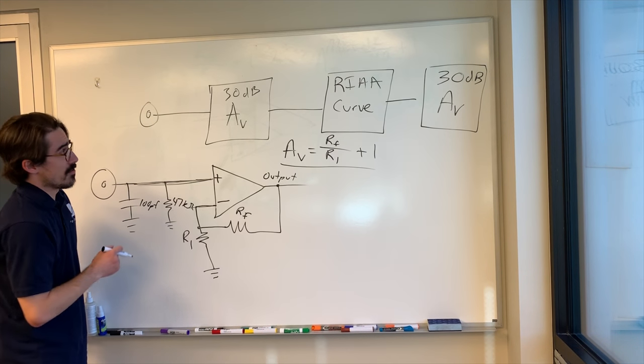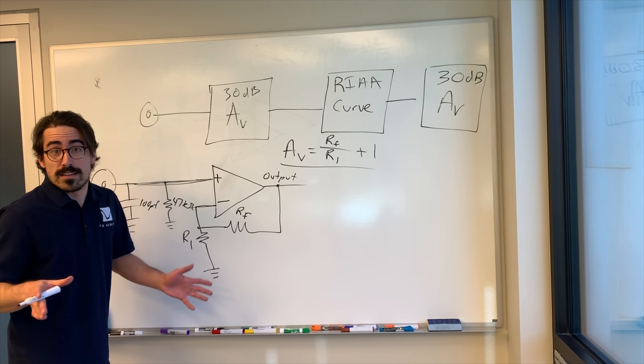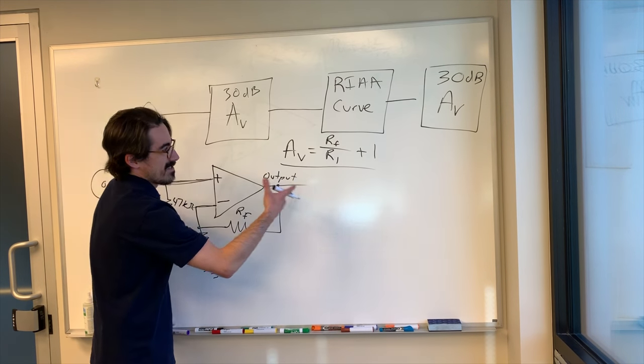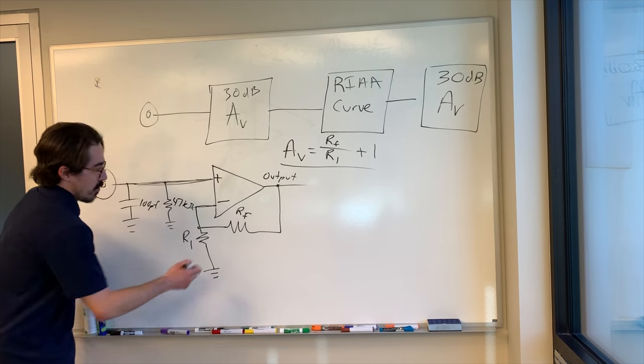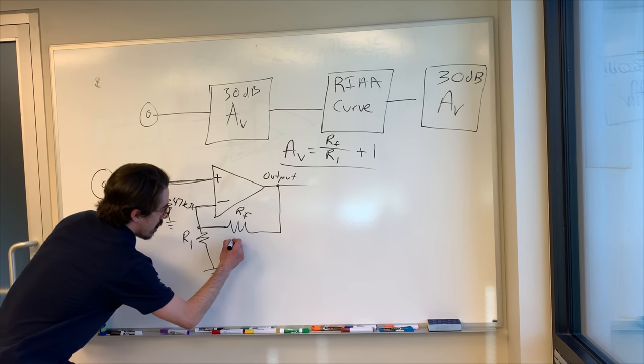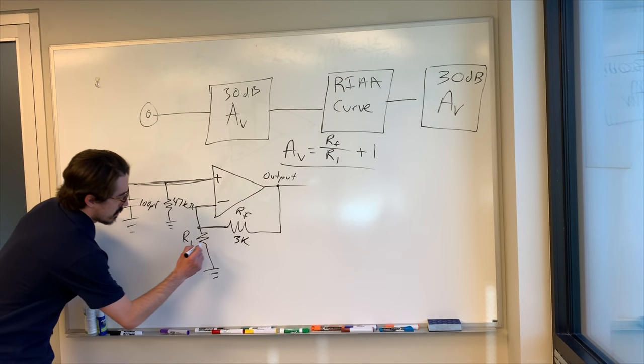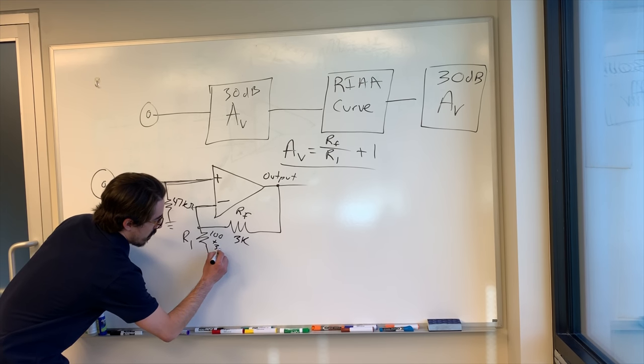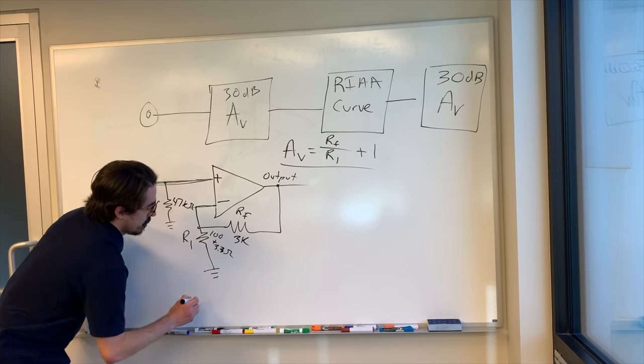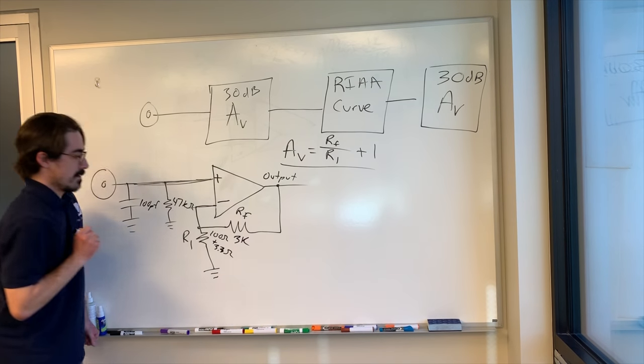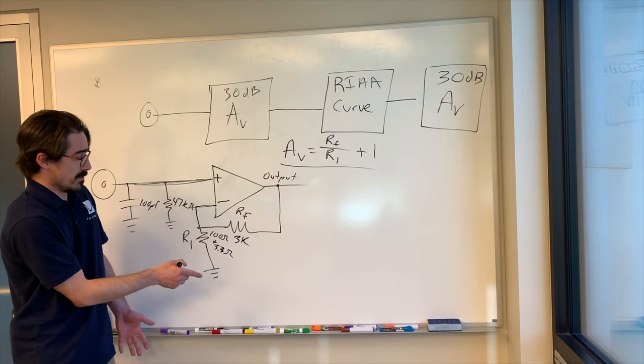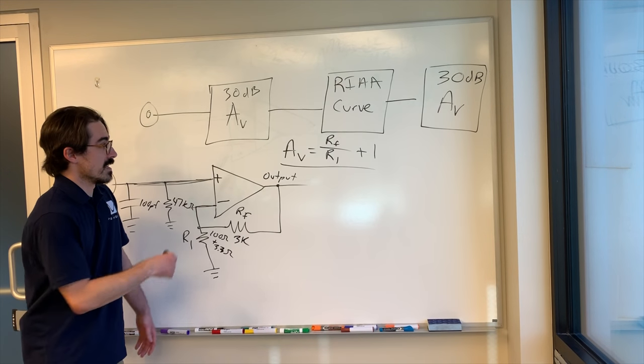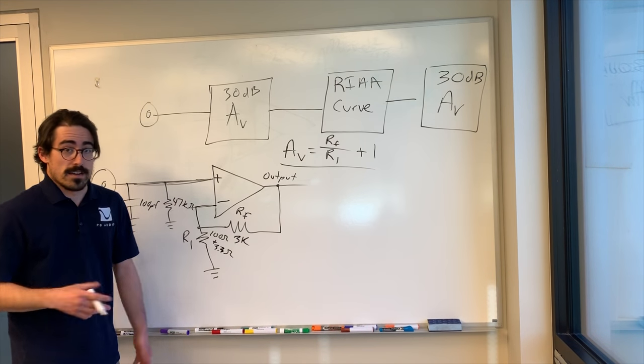So let's set that, so we need 30 dB. 30 dB is roughly 30 times voltage gain. So the ratio here, we want to make it roughly 29. So that's going to be, I'm going to do a 3K resistor here, and I'm going to do a 100 ohm resistor plus a 3.3 ohm resistor. So you have 3,000 ohms divided by 103-ish, which is going to be roughly 29. So that's going to give us an overall gain of 30.